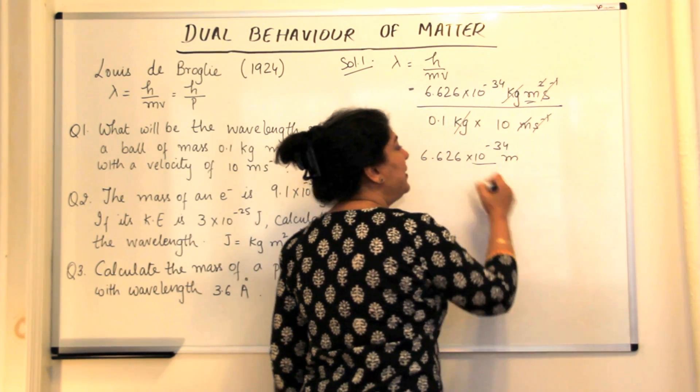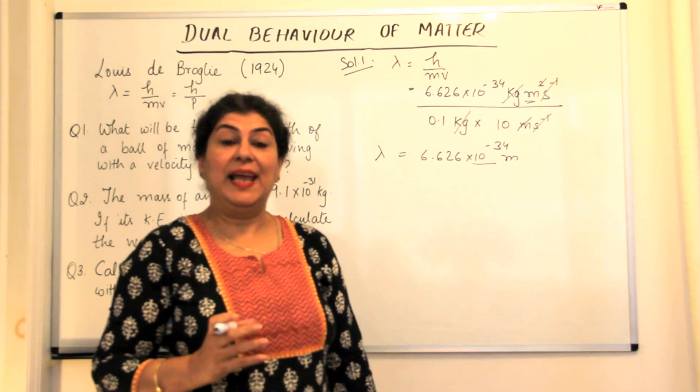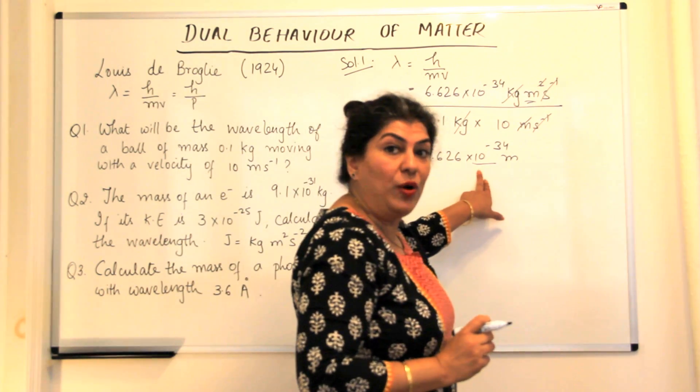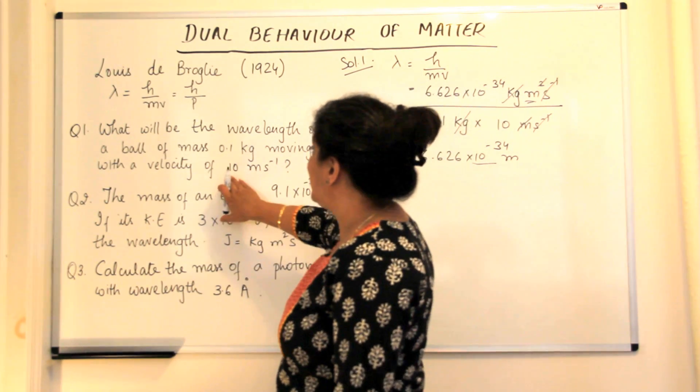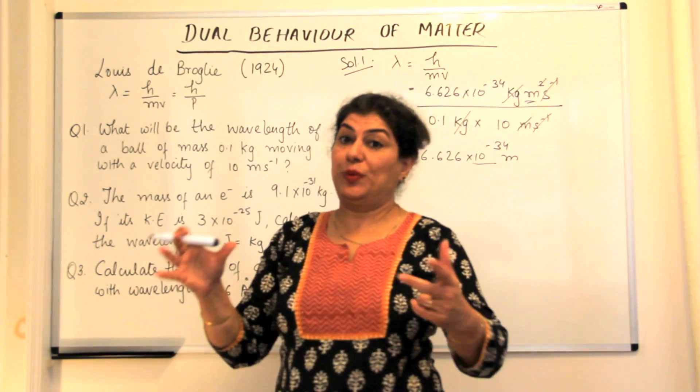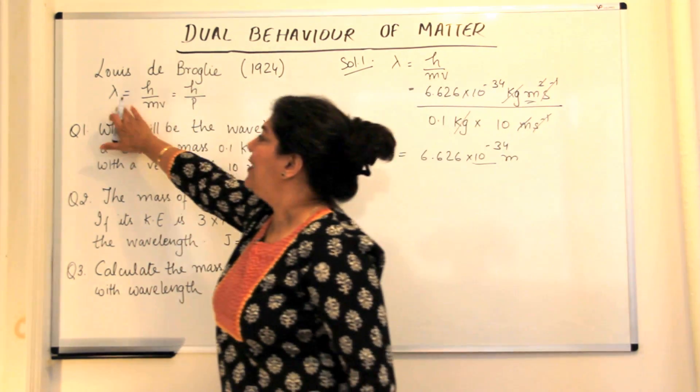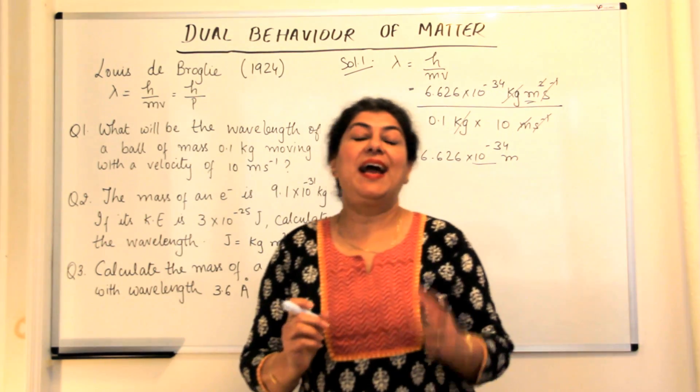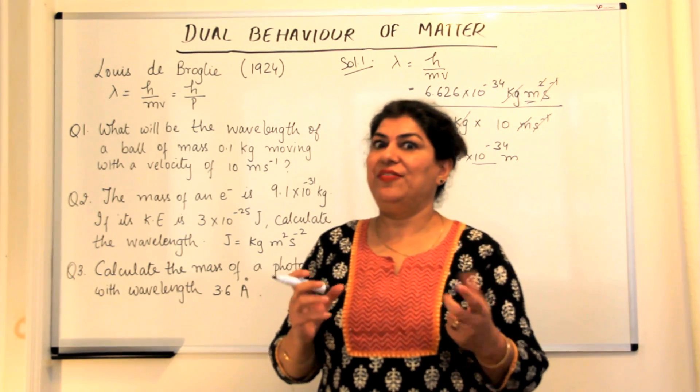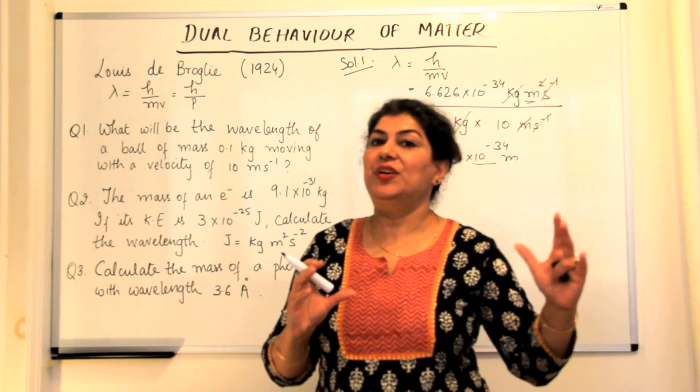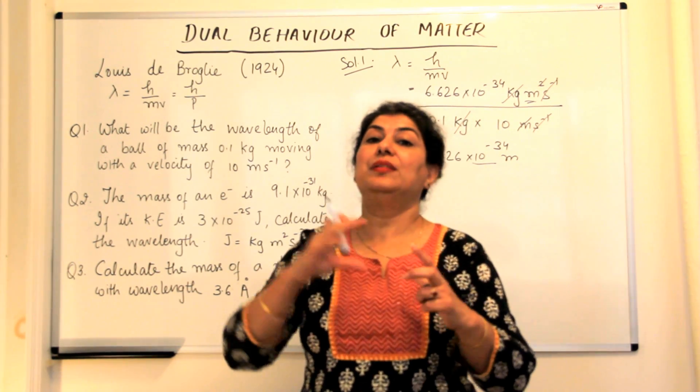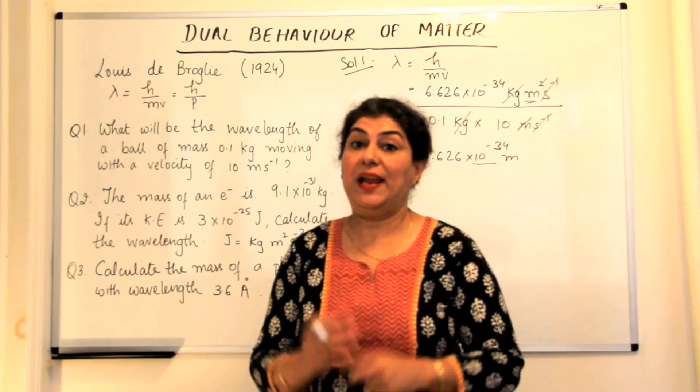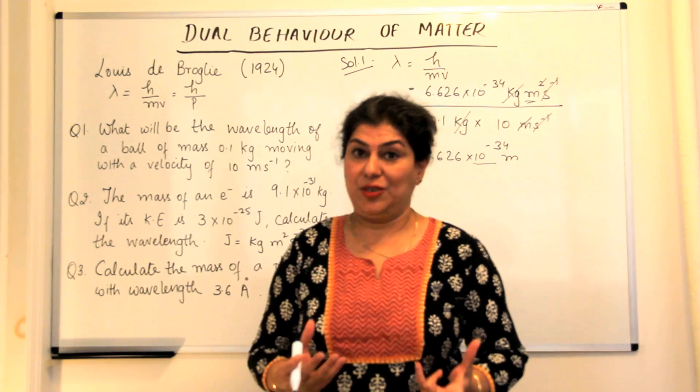Now minus 34 is very, very small and since it's very small, if you see the ball here, the ball has a mass which is 0.1 kg which is very large, due to which the wavelength is extremely small and therefore we cannot identify the wave-like nature. It is negligible. Therefore, we cannot notice the wave-like nature of a ball and it appears to be just a particle to us.